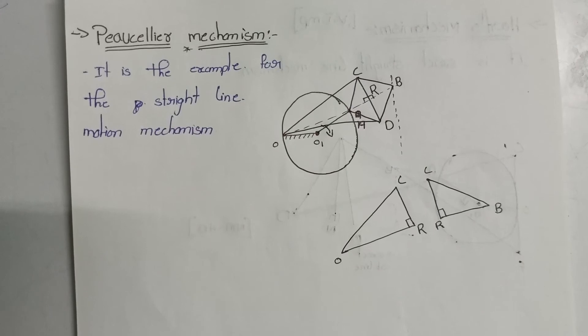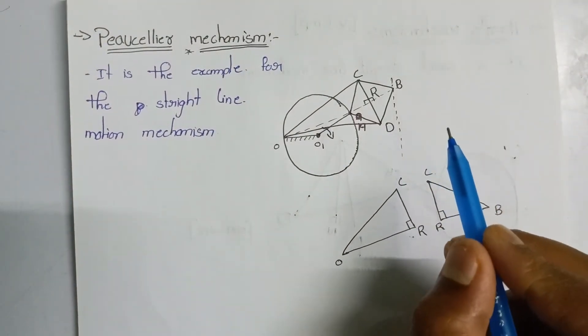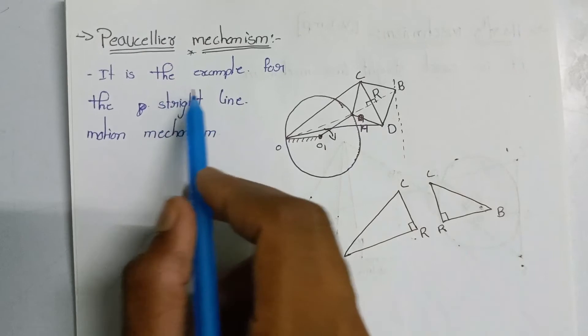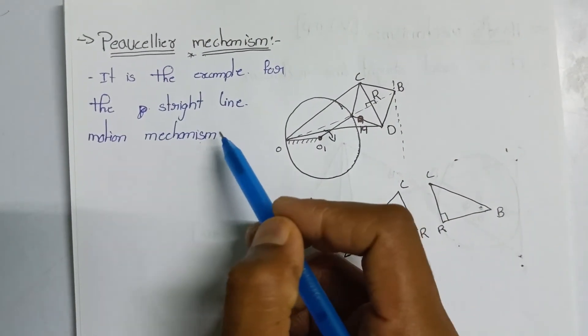The Peaucellier Motion Mechanism is called Exact Straight Line Motion Mechanism. This mechanism is found in exact straight line. This is the example for the Straight Line Motion Mechanism.